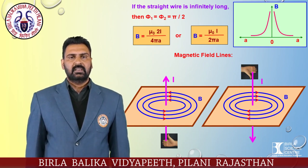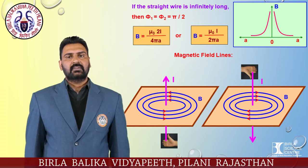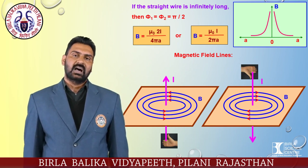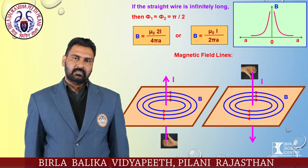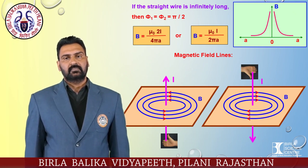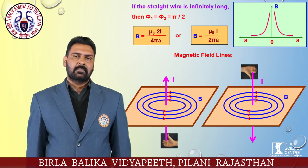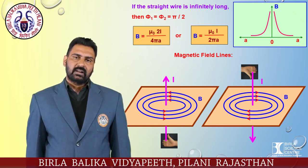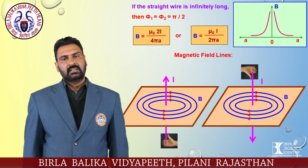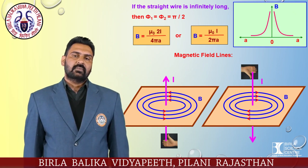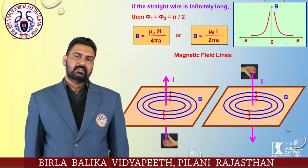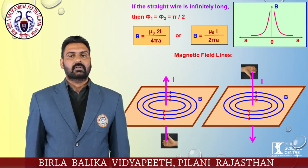The direction of magnetic field B is the same as that of dl × r⃗, determined by the right hand screw rule. It is perpendicular to the plane of the diagram and entering into the plane at point P. From the figure, if the direction of current is upward, the magnetic field is anti-clockwise; if the current direction is downward, the magnetic field is clockwise.